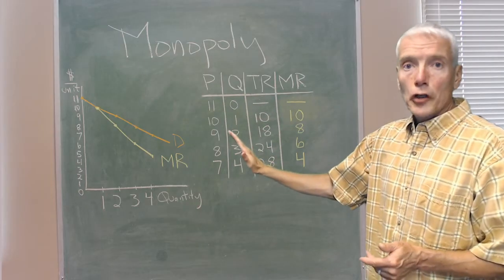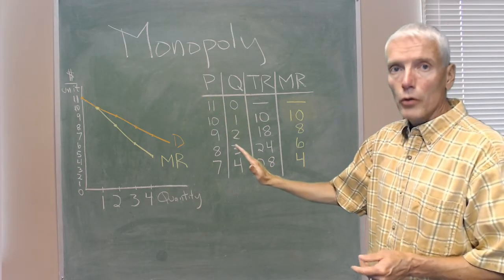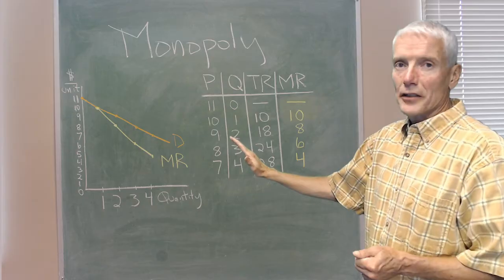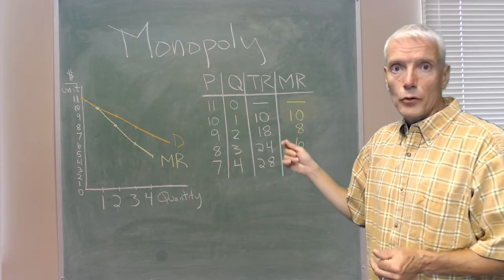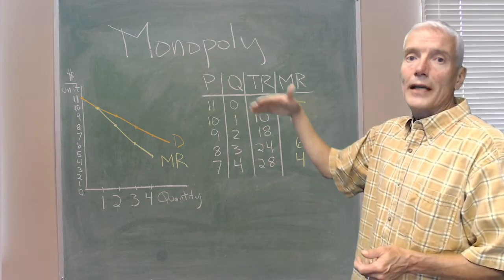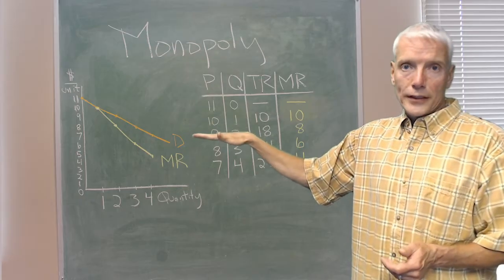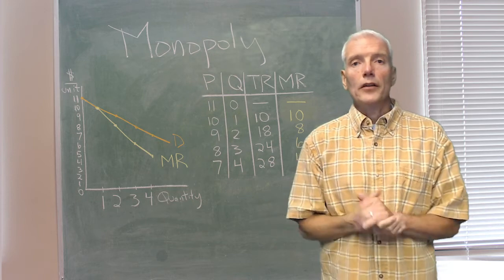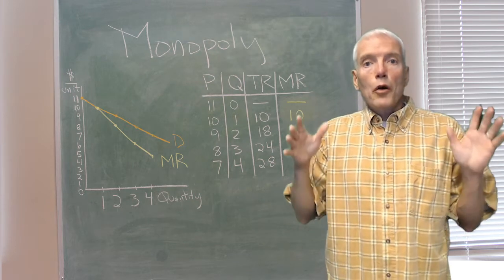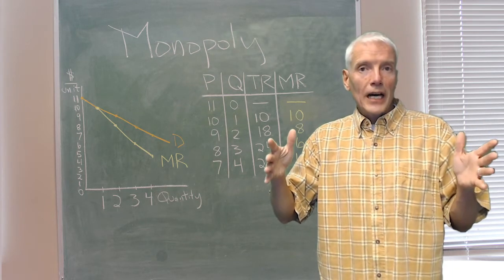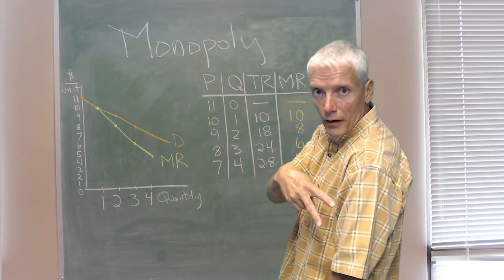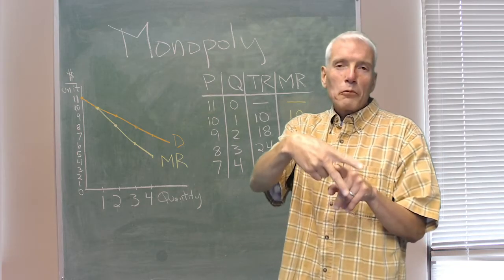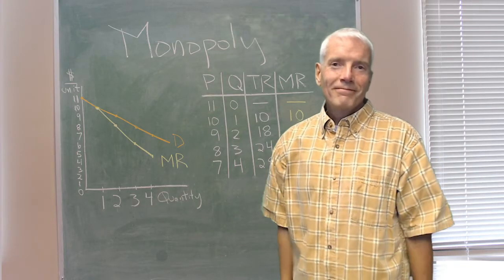and the marginal revenue curve continues below the demand curve, as we see it here. And now we see exactly why. Because in order to sell more, it has to lower its price on all the units. So the marginal revenue is the price minus what it loses from lowering the price on those other units. We also see why one of the gangster signs for economists goes like this. Demand curve, marginal revenue below it. Have a great day.